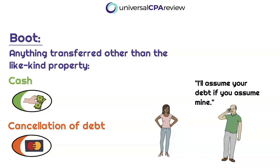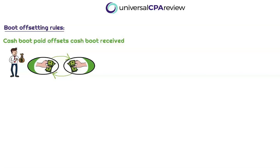Keep in mind, this is not the like-kind property itself — this is anything in addition. For example, if cash boot is paid but also cash boot is received in this like-kind exchange transaction, cash boot paid can offset cash boot received. So we're going to recognize the net cash boot.